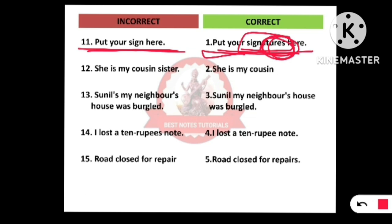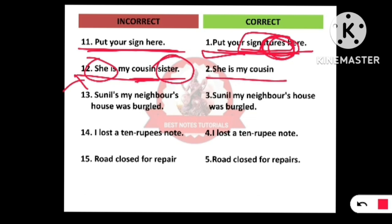Number twelve: 'She is my cousin sister.' This is wrong because we don't use 'sister' along with 'cousin.' When you use the pronoun 'she,' it is understood that it is not a boy but a girl. So just say: 'She is my cousin.' If it is a male member, say: 'He is my cousin.' The pronouns 'he' and 'she' already differentiate the gender of the cousin.